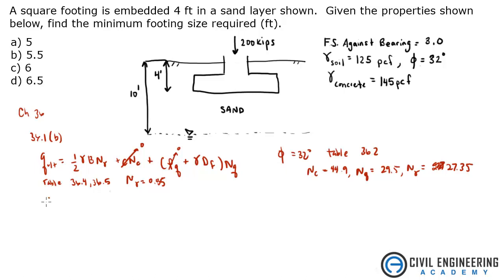All right, so we have what we need to write this out. So q ultimate equals 0.5 times 125 times b, we don't know, times n gamma 27.35 times 0.85 plus zero plus 125 times depth was 4 and n q is 29.5.